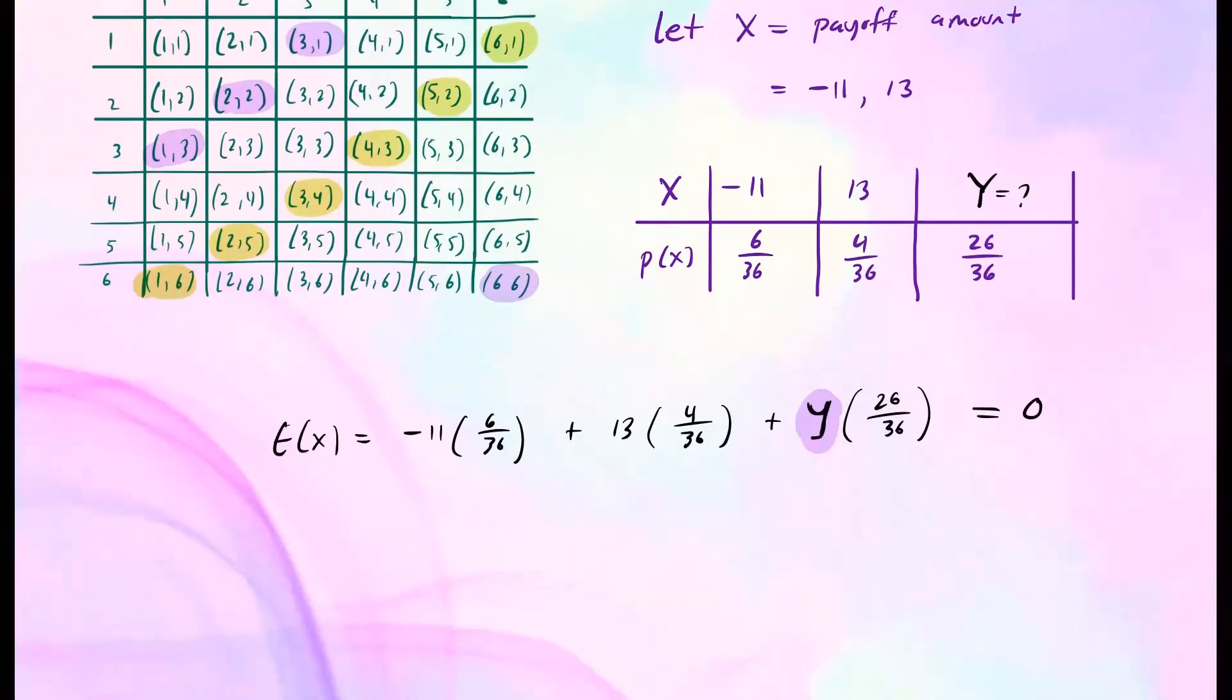So after doing the calculation, put it in your calculator, you'll get y is equal to 7 over 13. In other words, this is about 0.538 or 54 cents. So we know y has to be, or that component, this has to be $0.54 in order to make this game fair because we'll get expected value to be zero.